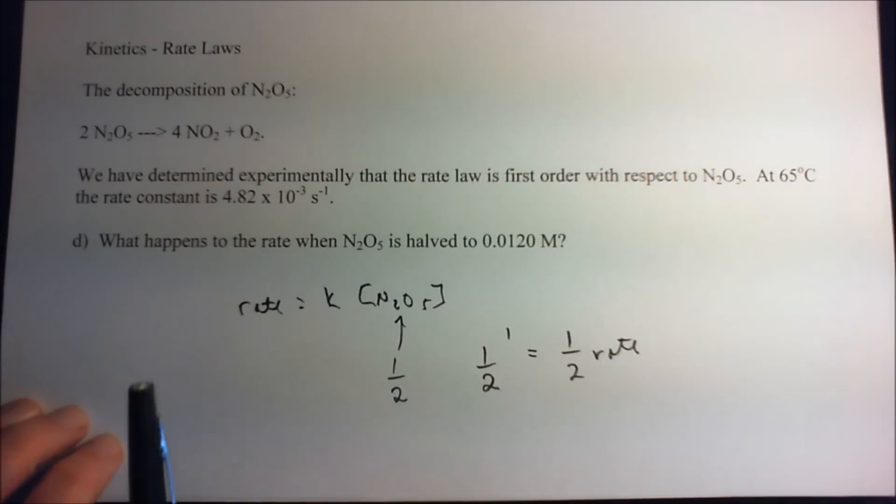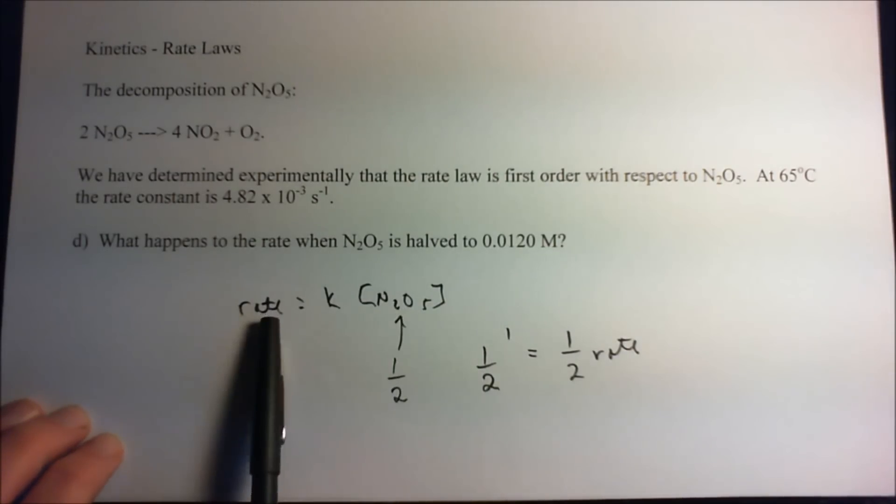You halve the concentration, you get half the rate. You double the concentration, you get double the rate. This is what it means to be first order with respect to N2O5.